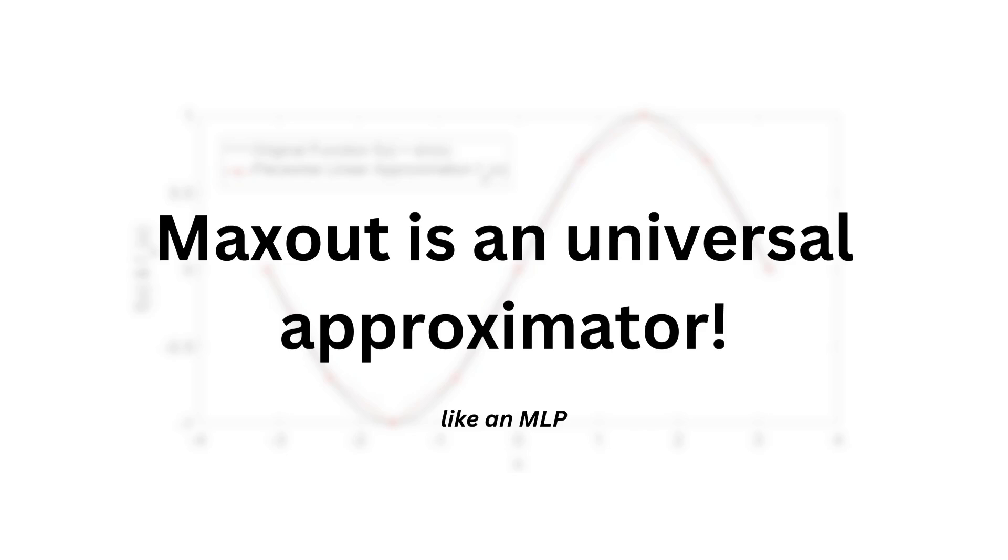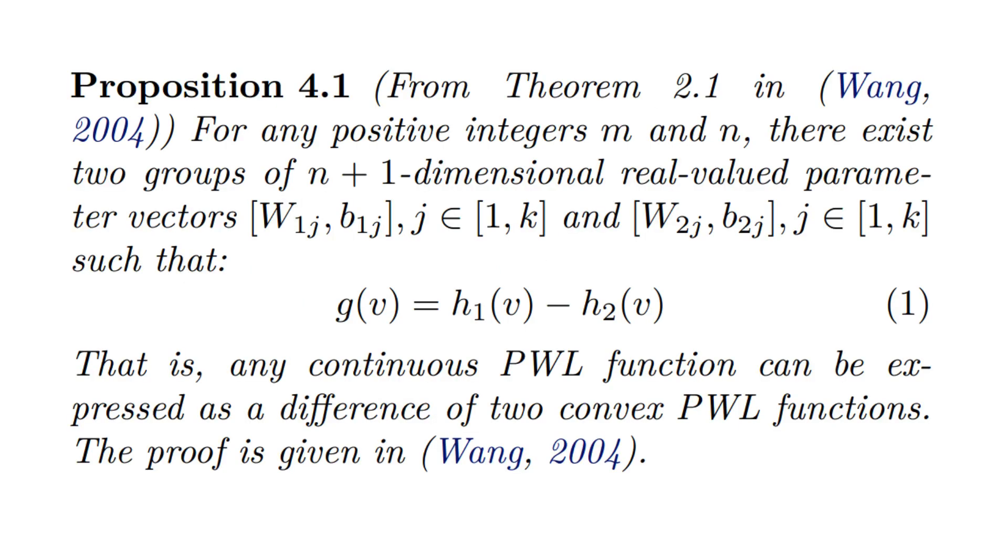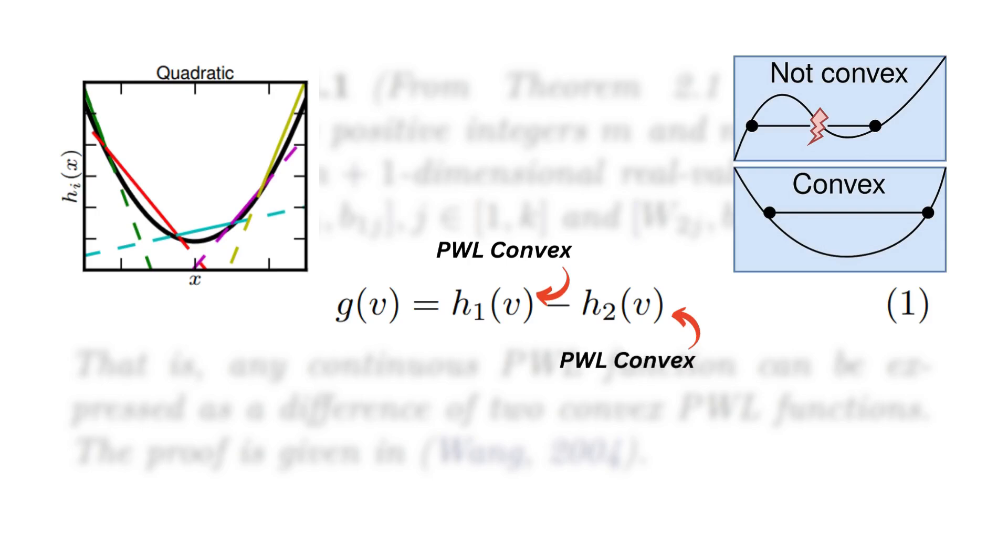Like the MLP, the maxout network is also a universal approximator, meaning that it can approximate any function. The proof is laid down in the paper, and another one, but the crux is this part. Any continuous piecewise linear function can be expressed as a difference of two convex piecewise linear functions.